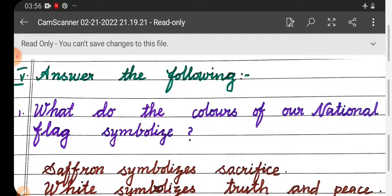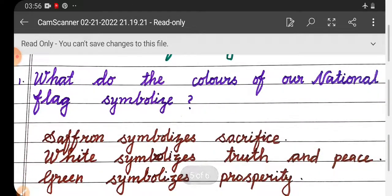First one: What do the colors of our national flag symbolize? Saffron symbolizes sacrifice, white symbolizes truth and peace, green symbolizes prosperity.